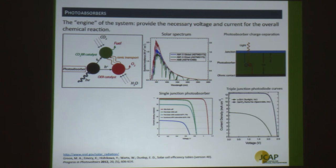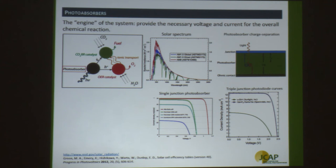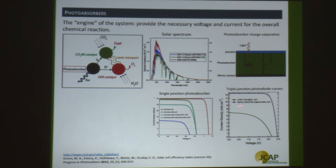A few power curves from single-junction photoabsorbers — gallium arsenide, silicon, or chalcopyrite — show that the voltage is often limited by the bandgap. A single PV junction alone cannot drive the overall reaction because the voltage window is around 1.3 volts. One solution is to stack semiconductors into tandem or triple-junction materials, adding voltages while sharing the same current. Triple junction cells — such as indium gallium phosphide / gallium arsenide / germanium — can produce over 2 volts.